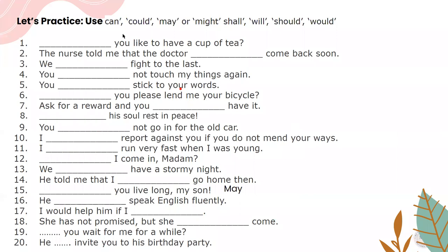Let's do an exercise. The modals we have learned are can, could, may, might, shall, will, should, and would. More modals like ought to, have to, could have, would have, and should have will be covered in the next video. First question: Dash you like to have a cup of tea? This is a polite offer, so the answer is would — Would you like to have a cup of tea? Second: The nurse told me that the doctor dash come back soon. Since we're expressing uncertainty about the future in a past context, the answer is would.